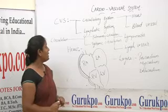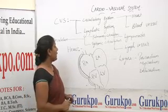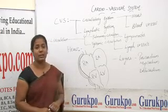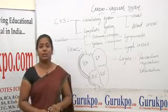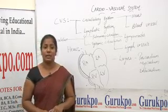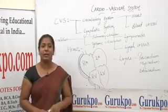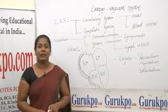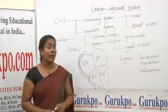Regarding its structure, the heart is divided into three layers: the outer layer is the pericardium, the middle layer is the myocardium, and the inner layer is the endocardium.